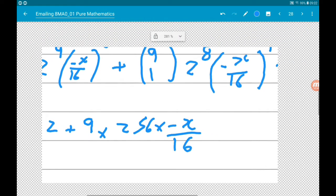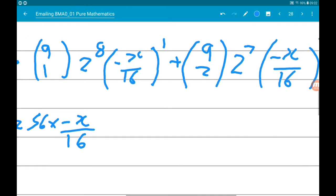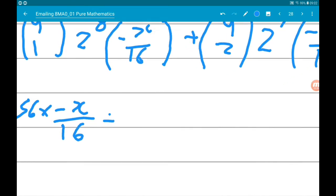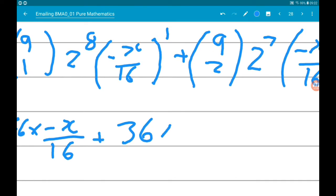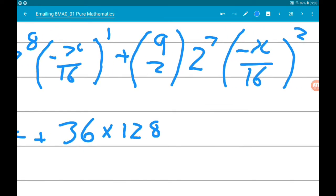And then the third term, 9 choose 2 is 36, 2 to the power of 7 is 128, and then we got that times minus x over 16 squared, so that's positive x squared over 16 squared.